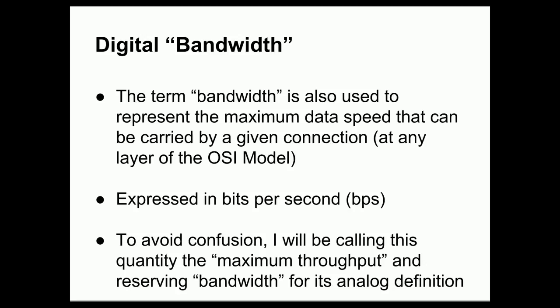Now, I've defined bandwidth as a physical property measured in hertz. This is the so-called analog bandwidth that signal processing folks use. In networking, the term bandwidth often gets casually used to mean so-called digital bandwidth. And this digital bandwidth term refers to the maximum data speed or the maximum data rate that a given connection can carry. And this can be measured at any layer of the OSI model and is expressed in bits per second. The problem with this term is that nobody says analog bandwidth or digital bandwidth. And when we're being precise about the entire networking system, it can get confusing which type of bandwidth is under discussion. Sometimes it's obvious from the context. Sometimes it isn't. So, to avoid confusion, I'm going to be calling this quantity, or the so-called digital bandwidth quantity in bits per second, the maximum throughput of the connection, and I'll be reserving the term bandwidth for its analog signal processing definition with units in hertz.